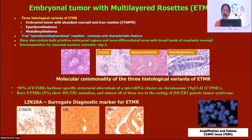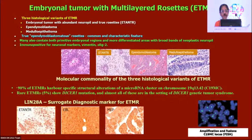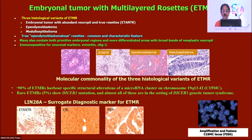ETMRs have three histological variants sharing a molecular commonality: embryonal tumor with abundant neuropil and true rosettes (ETANTR), ependymoblastoma, and medulloepithelioma. For a practical IHC marker for ETMRs: LIN28 is useful. If morphology shows any of these variants — especially with characteristic ependymoblastoma rosettes — a positive LIN28 is supportive. However, LIN28 is sensitive but not specific. Supplement with FISH for C19MC microRNA cluster amplification and fusions to confirm diagnosis.